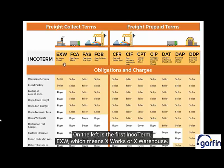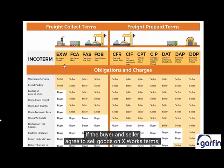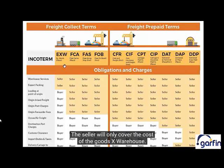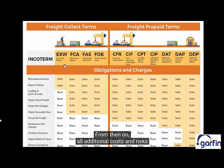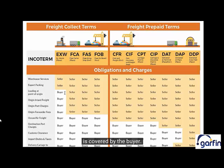On the left is the first Incoterm, EXW, which means Ex-Works or Ex-Warehouse. If the buyer and seller agree to sell goods on Ex-Works terms, then the seller's obligation is very simple. The seller will only cover the cost of the goods Ex-Warehouse — meaning the seller will manufacture the goods, have them packaged and ready for collection from their warehouse. From then on, all additional costs and risks involved in transport away from the warehouse are covered by the buyer.